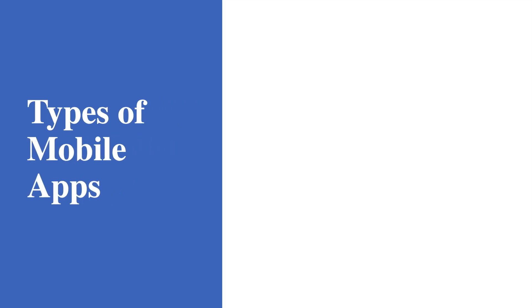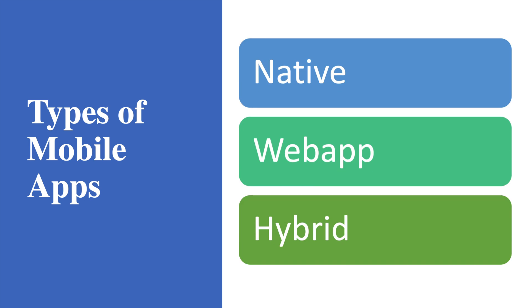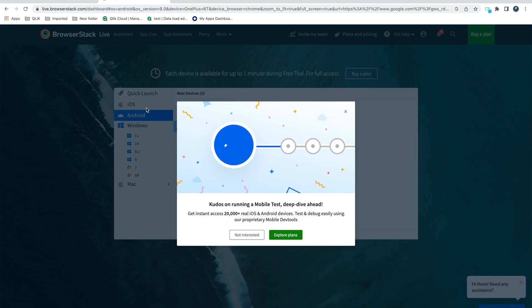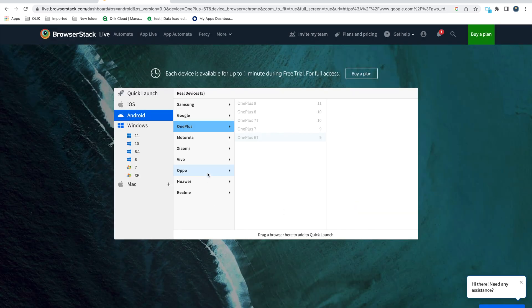Before we start, let's cover what types of mobile applications we have. When someone asks about the types of applications — mostly in interviews — people tend to think of Android or iOS applications. But there are actually three types of mobile applications we deal with: native, web app, and hybrid.